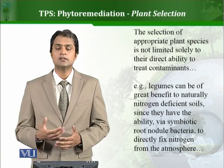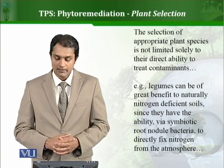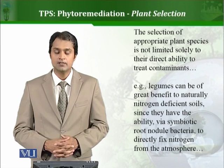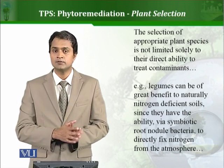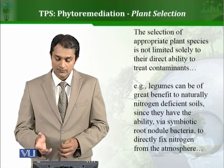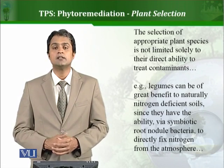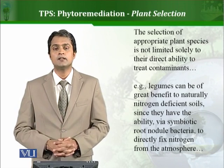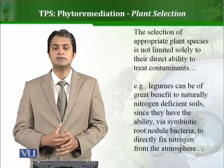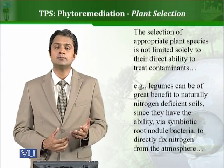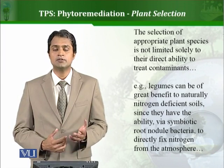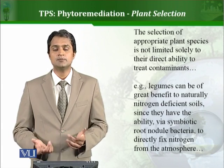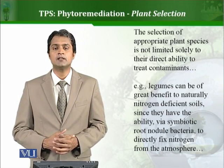The bacteria present in the rhizosphere are actually doing the job — they are transforming the contaminant, not the plant itself. For example, different types of legumes can be of great benefit to a soil that is naturally deficient in nitrogen. Legumes have symbiotic root nodule bacteria, and these bacteria have the ability to fix nitrogen. So indirectly, the plants help treat the soil. Plants can be used both directly and indirectly for the remediation of soil.